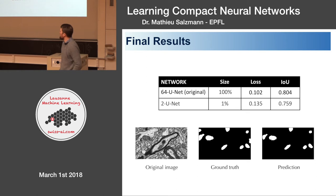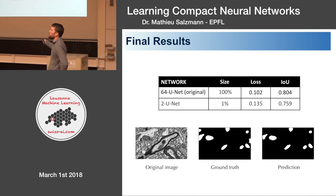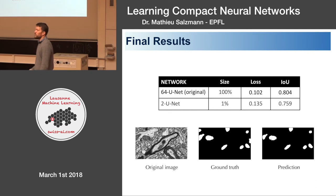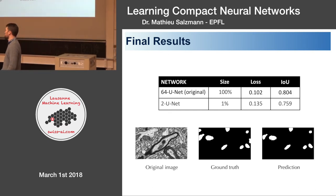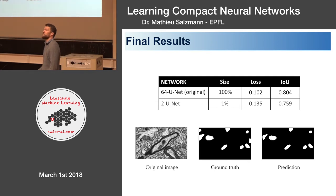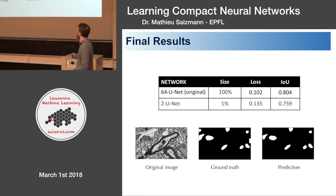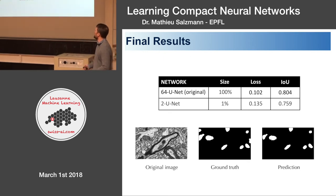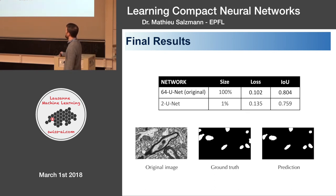Here's the final comparison. The 64-unit original network — 100% of the network — has a test loss of 0.1 and an IOU of 80%. With our 2-unit model, which is about 1% the size in terms of number of parameters, we get a loss that's just slightly higher and an IOU just slightly lower. So we get very similar performance to the original for a model that is only 1% the size. The example prediction on the image looks pretty good in terms of accuracy and segmentation quality.